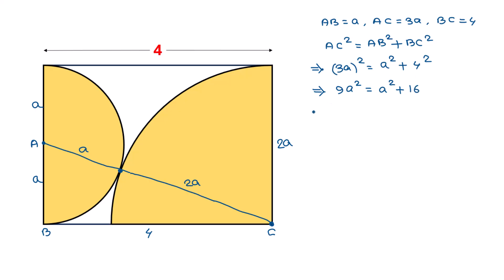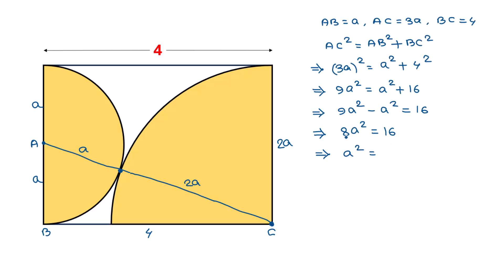So 9a² equals a² plus 16. Taking a² to the left side we get 9a² minus a² equals 16, so 8a² equals 16. Dividing both sides by 8 we get a² equals 16 divided by 8, which is 2.